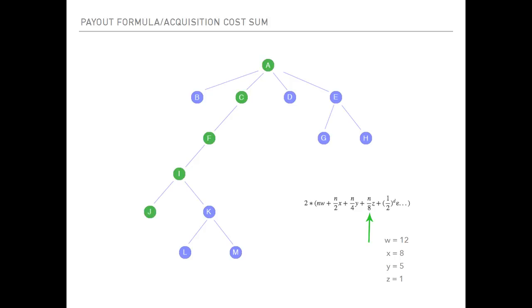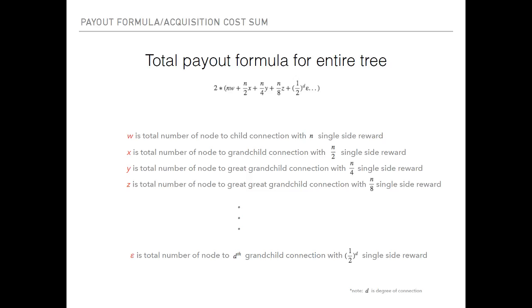So these are great-great-grandchild—basically four edges, so four links: A-C-F-I-J, A-C-F-I-K, and you can see C-F-I-K-L, C-F-I-K-M. Finally, these are all the nodes highlighted, which total number is four. You can pick up the pattern here and just keep going down. I denoted it with epsilon—you just keep going down to the node of d-th kind of grandchild connection, and you reward them each with 1 over 2 to the power of d.